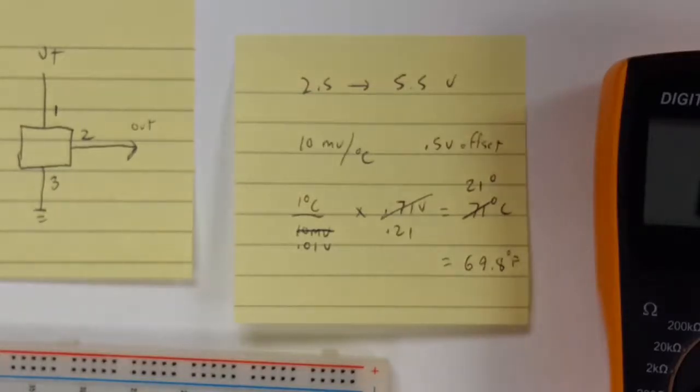Right now, the room temperature is apparently 21 degrees centigrade. If you translate that into Fahrenheit, that translates into 69.8 degrees Fahrenheit, which is right.